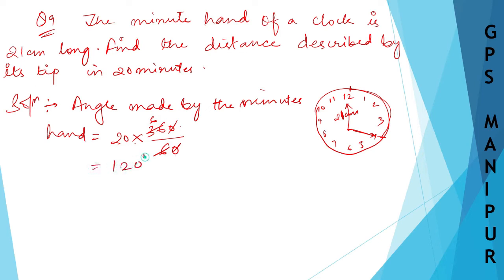So the angle made by this one is 120 degrees. And we know this one. Therefore, the distance described by its tip: what will be the distance from here till here?